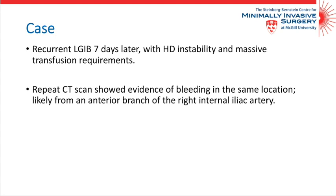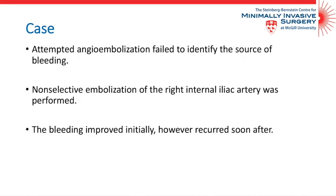The patient's clinical condition improved with cessation of bleeding. However, seven days later, the patient had recurrent lower GI bleeding causing hemodynamic instability and massive transfusion requirements. A repeat CT scan showed evidence of bleeding in the same location, likely from an anterior branch of the right internal iliac artery. Attempted angioembolization failed to identify the source of bleeding, and non-selective embolization of the right internal iliac was performed.